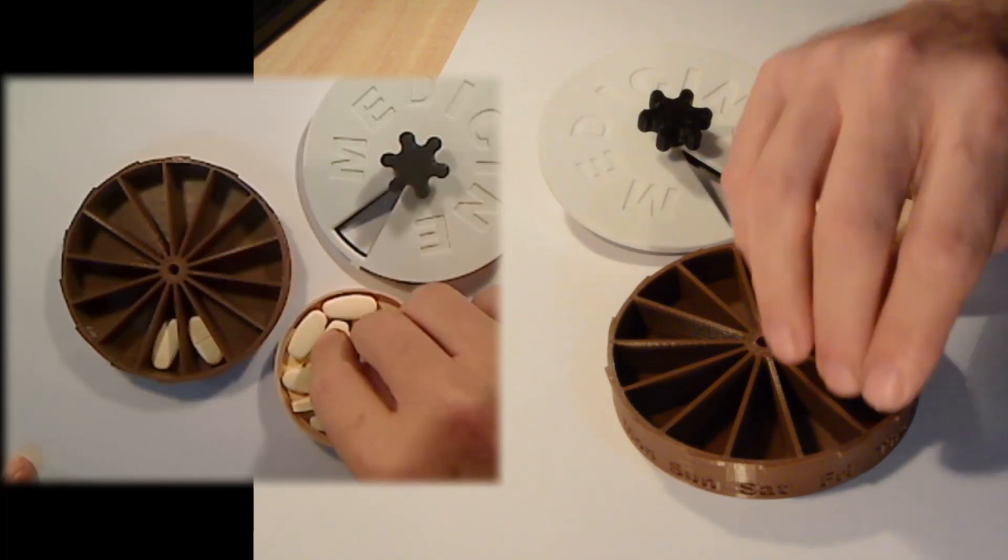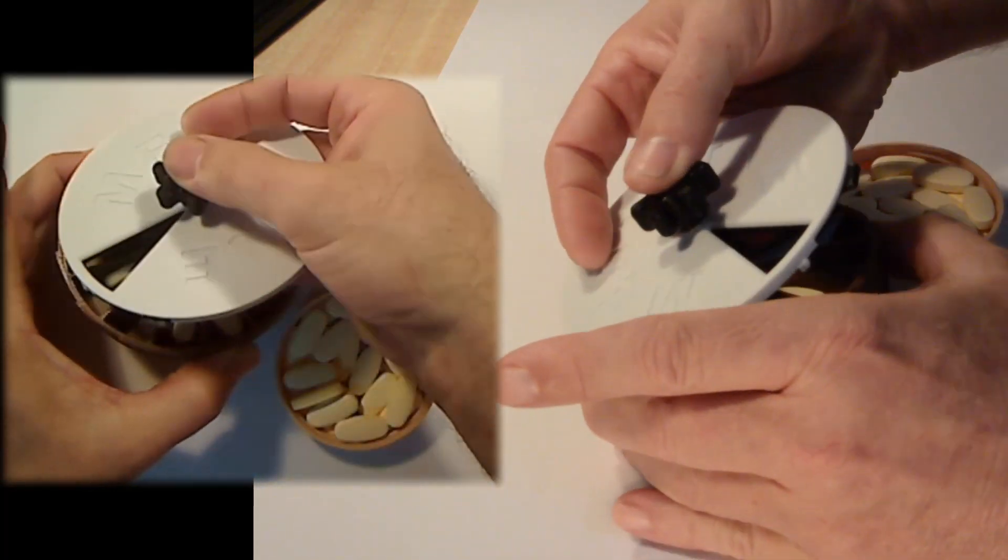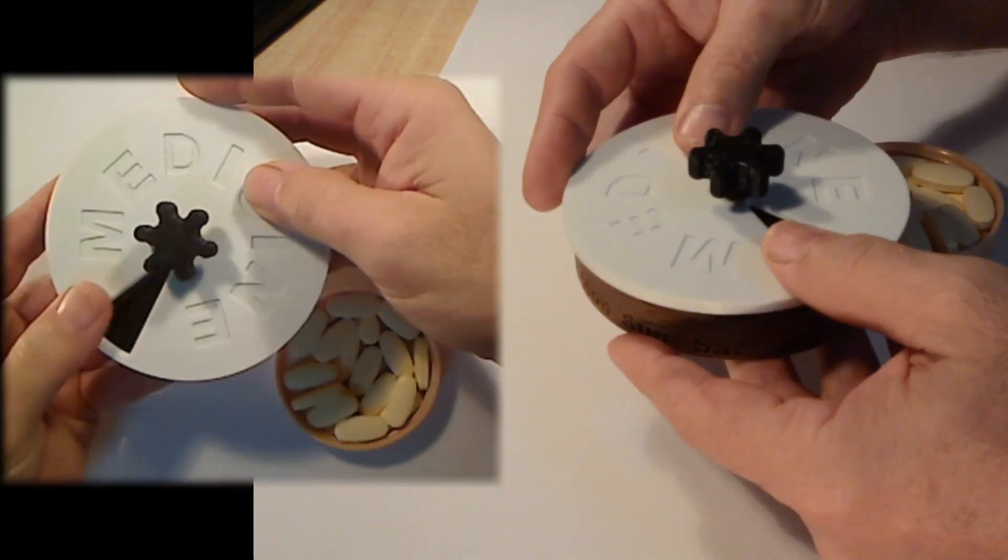Fill the dispenser container with your tablets, then place the assembled lid on the container base, inserting the hex bolt through the provided hole.